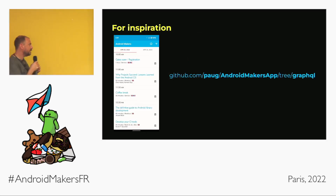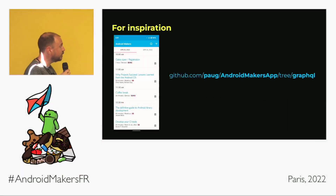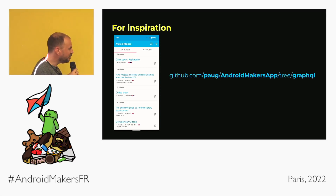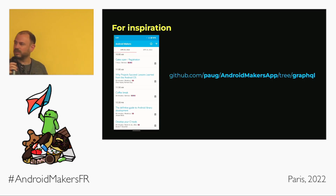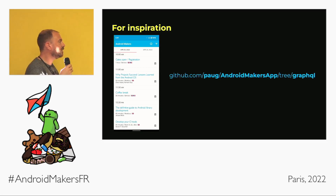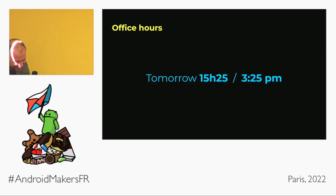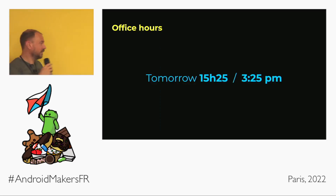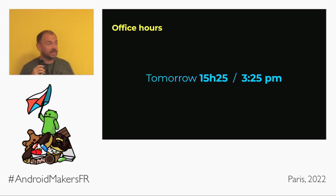For inspiration and to play with these concepts, you can look at the Android Makers app. Not the main branch, but there's a specific GraphQL branch we worked on recently that shows an example app using GraphQL and the normalized cache. We also have office hours tomorrow if you have questions.